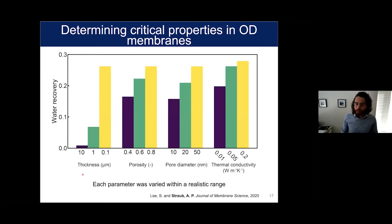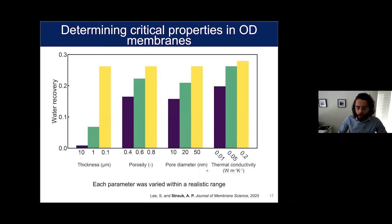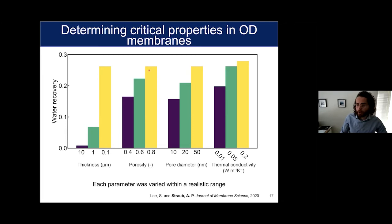The first thing Sangsuk did was look at the range of parameters we were concerned about and see what effect they had on performance, defined here as the water recovery — how much water we can get out of a membrane module, where a higher value is better. He varied four parameters within a realistic achievable range: thickness, porosity, pore diameter, and thermal conductivity. The most significant effect is with thickness — we can vary it orders of magnitude, and water recovery really increases as you go to lower thicknesses. For other parameters, porosity is limited by the material to around 0.8, and thermal conductivity is a property of whatever material we use. So thickness is the key parameter we can play around with.